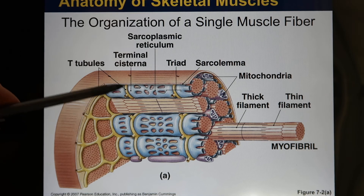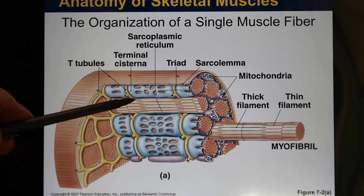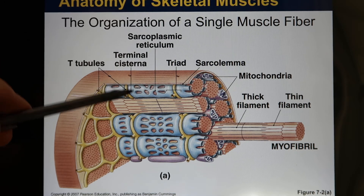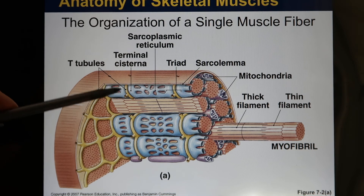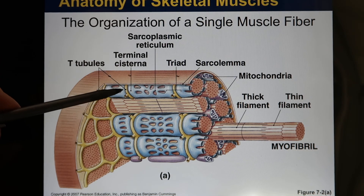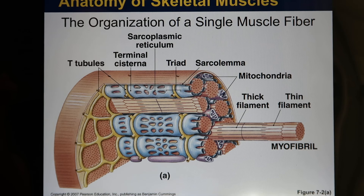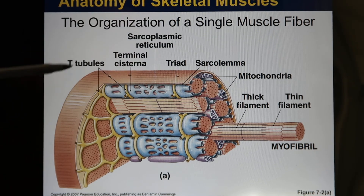The T-tubule connects to the SR through an area called the terminal cisterna. Each T-tubule always goes with two terminal cisternae — one T-tubule with one terminal cisterna on each side. Together, these three structures are called the triad: one T-tubule with two terminal cisternae.